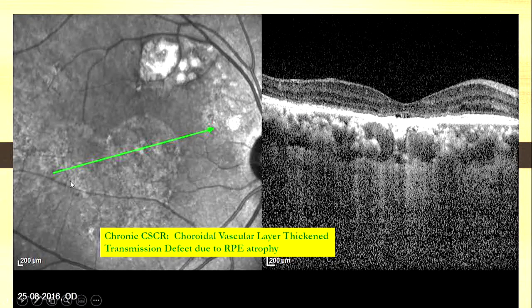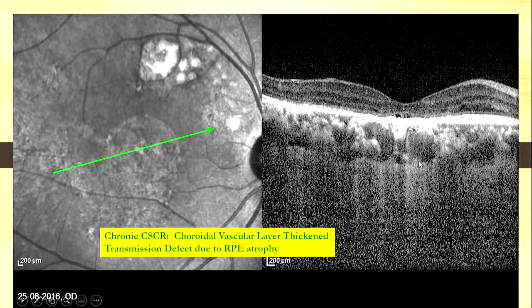This is a patient who's got chronic CSR gone into geographic atrophy. Some chorioretinal atrophy is occurring, and because of that there is more transmission of light — you see this? Because the RPE is gone, there's more transmission of light.